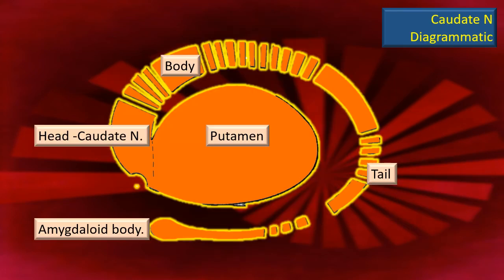That diagram clearly demarcates — let's forget the putamen for the moment — the head at the anterior end. The whole caudate nucleus is C-shaped: head at the anterior end, followed by the body, followed by the tail. Finally, the rest of the caudate nucleus runs forward in the temporal lobe and in the inferior horn.